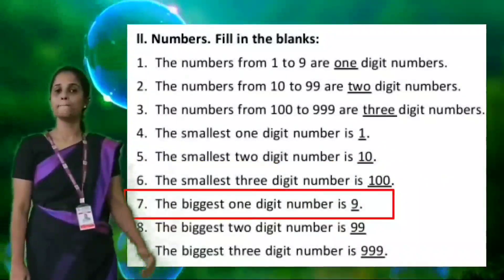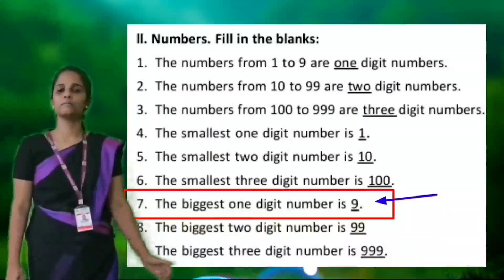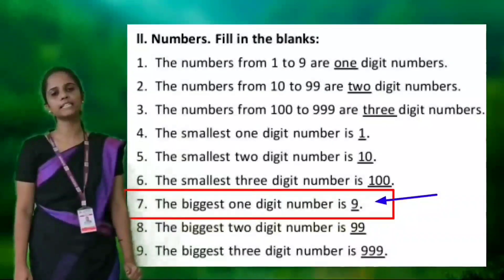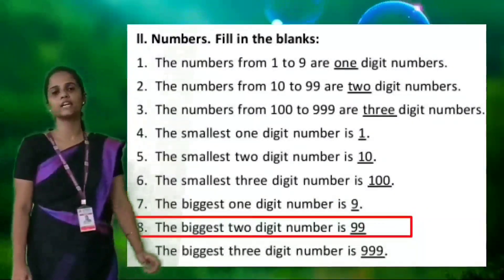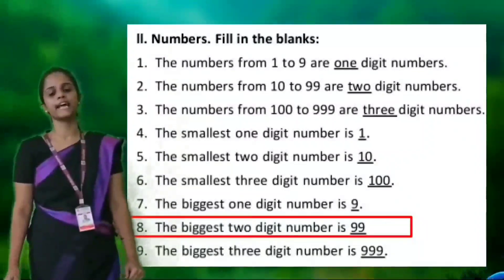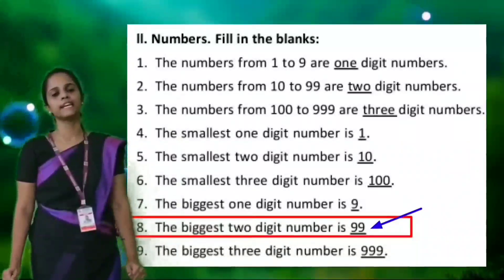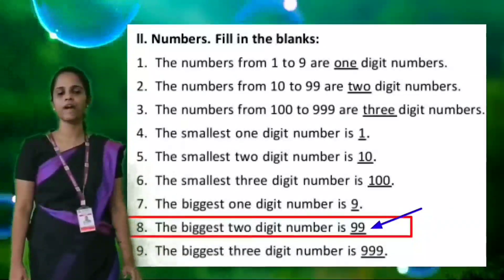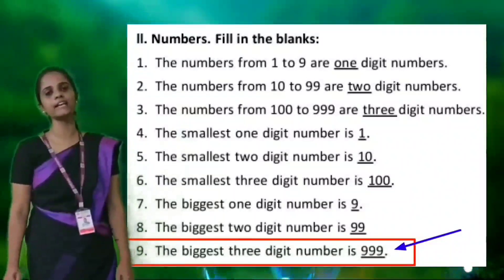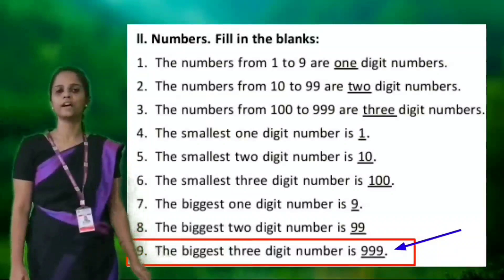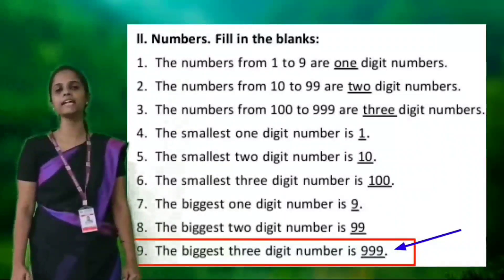Seventh: the biggest one digit number is 9. Eighth: the biggest two digit number is 99. The last one: the biggest three-digit number is 999.